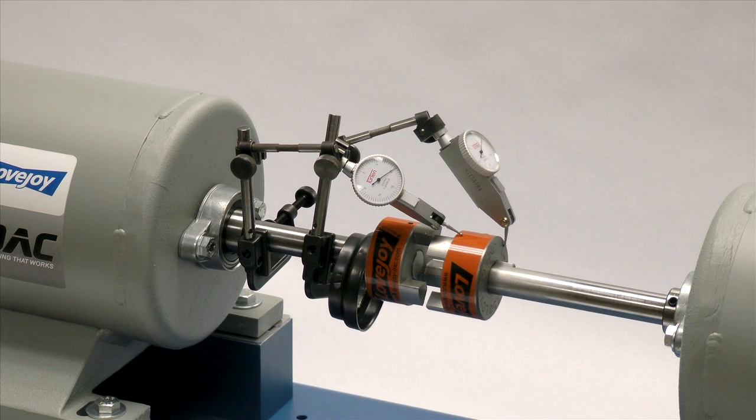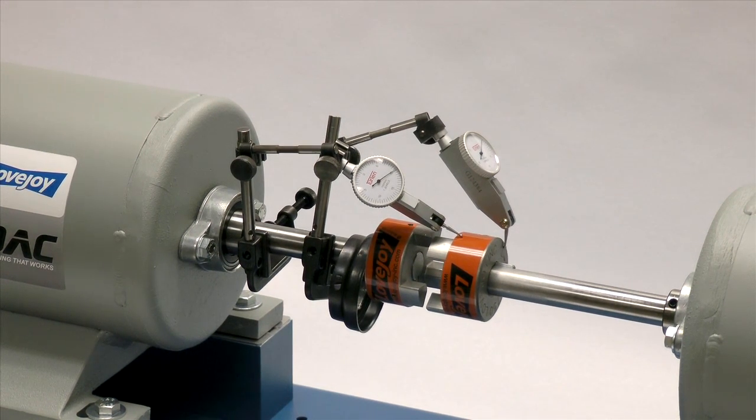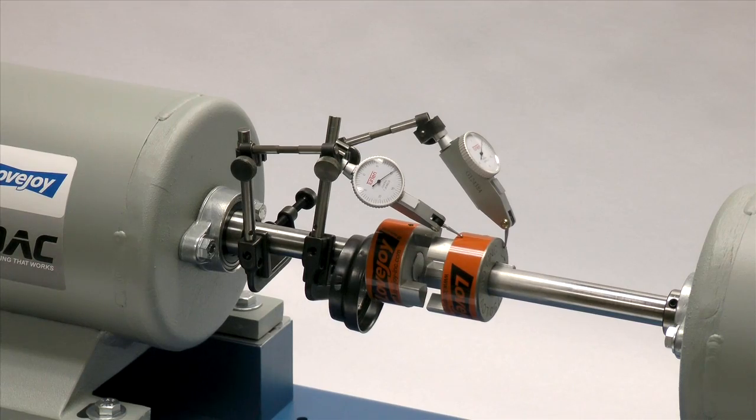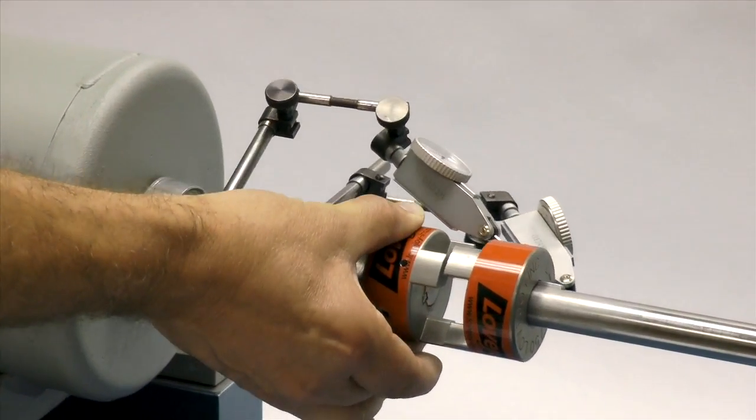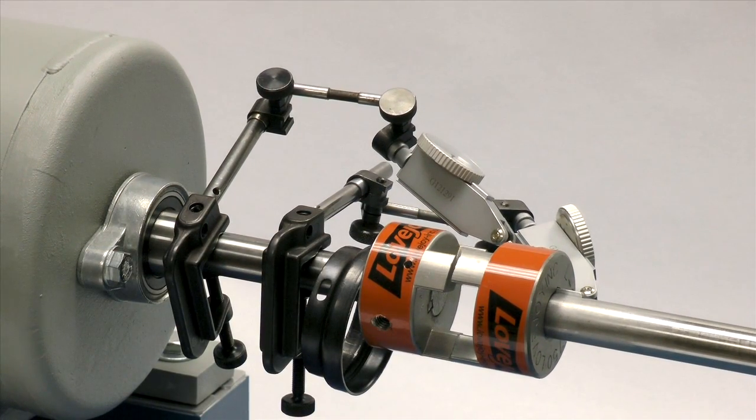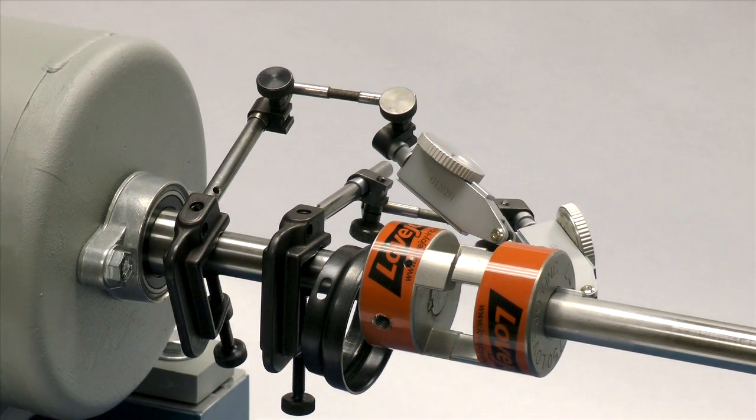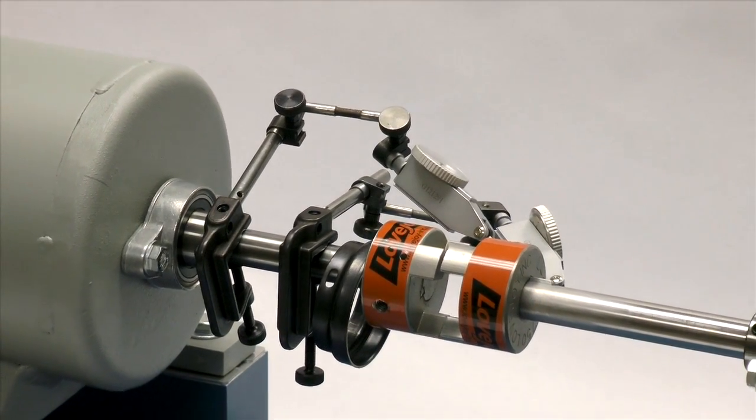If using a dial indicator, mount the indicator on the driver shaft with the sensor touching the hub on the opposite shaft. Rotate the shaft with the indicator to the 3 o'clock, 6 o'clock, 9 o'clock and 12 o'clock positions and make notes of the deviation on the dial. If this exceeds 0.015, fifteen thousandths of an inch, adjust the equipment to correct this condition.